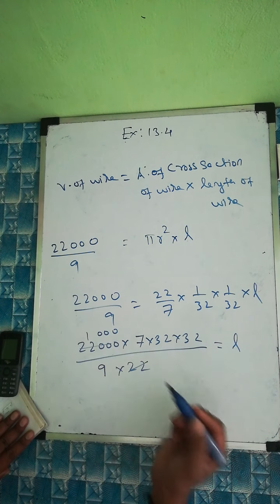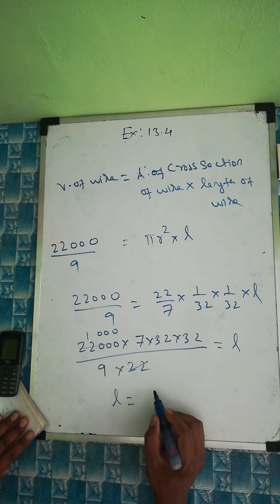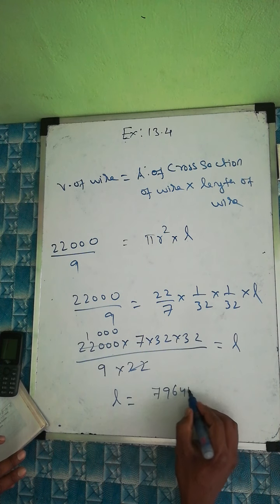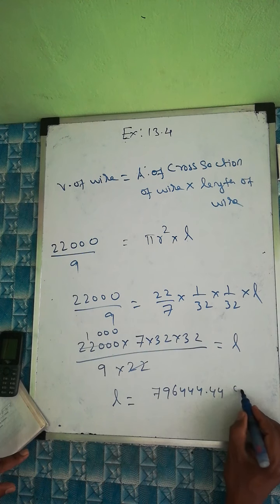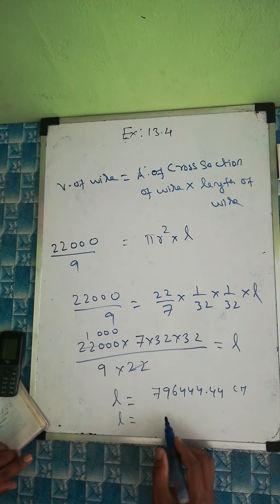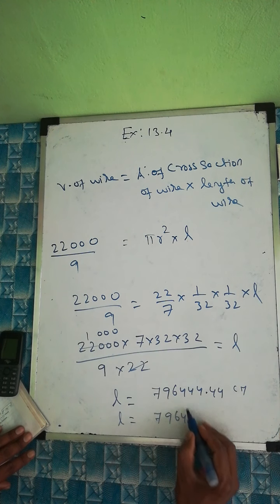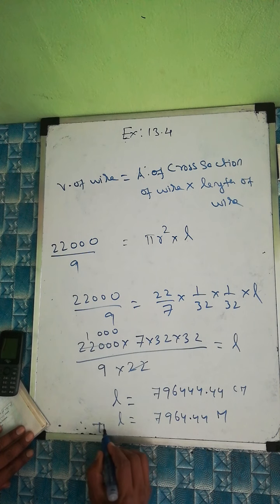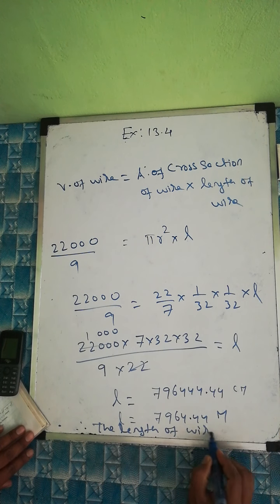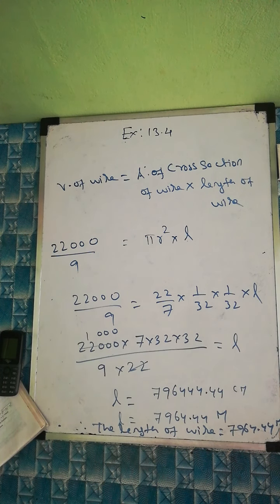Simplifying: cancel 22, we get l = 1000/9 × 7 × 32 × 32 = 7 × 32 × 32 × 1000 / 9. Multiplying gives 7,964,444... divided by 9, which equals 7964.44 centimeters. Converting to meters by dividing by 100: length of wire = 7964.44 ÷ 100. Therefore, the length of the wire = 7964.44 meters.